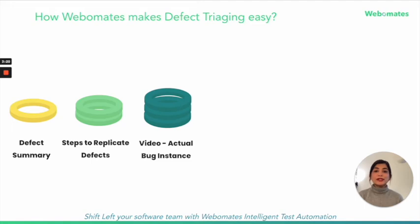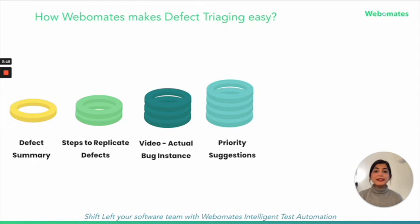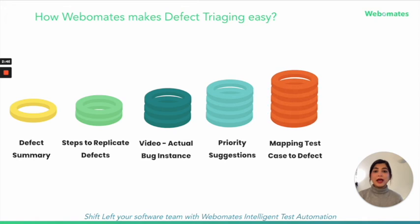Video: this unique process presents a walkthrough video of an actual instance of the bug happening. This removes the ifs and buts on how to reproduce a defect. Priorities are attached to the defects for easier categorization and defect management, and they can change based on stakeholders' input. Test case mapping: mapping a defect to a test case is helpful when the defect has been fixed and the module is retested.